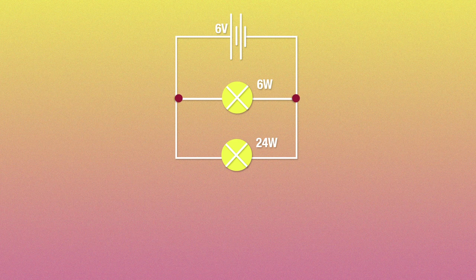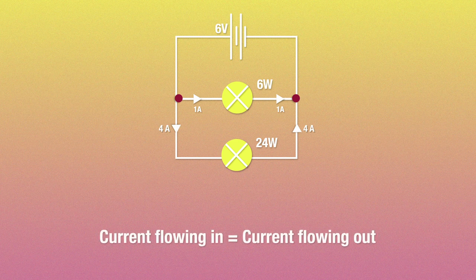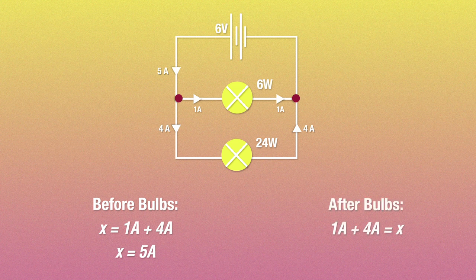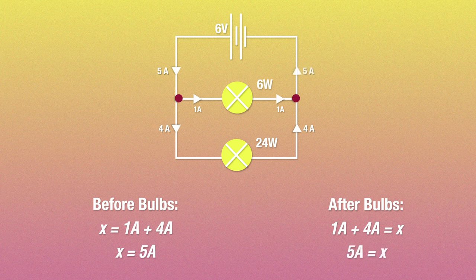Since the junction between the two bulbs has 1 ampere of current flowing out towards the first bulb, and 4 amperes flowing towards the second bulb, so the total current flowing into the junction has to be 4 plus 1, which is basically 5 amperes. And the same goes for the junction on the opposite end here. The current from the two bulbs will be 1 ampere and 4 amperes, so the current out of the junction and towards the battery should be 5 amperes.